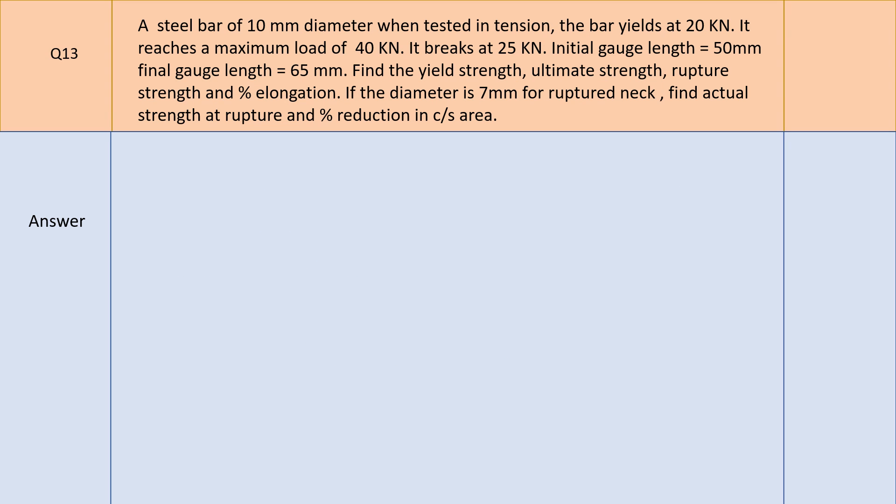Problem 2: A steel bar of 10 mm diameter when tested in tension — the bar yields at 20 kN, reaches a maximum load of 40 kN, and breaks at 25 kN. Initial gauge length is 50 mm, final gauge length is 65 mm. Find yield strength, ultimate strength, rupture strength, and percentage elongation. If the diameter at the ruptured neck is 7 mm, find actual strength at rupture and percentage reduction in cross-sectional area.